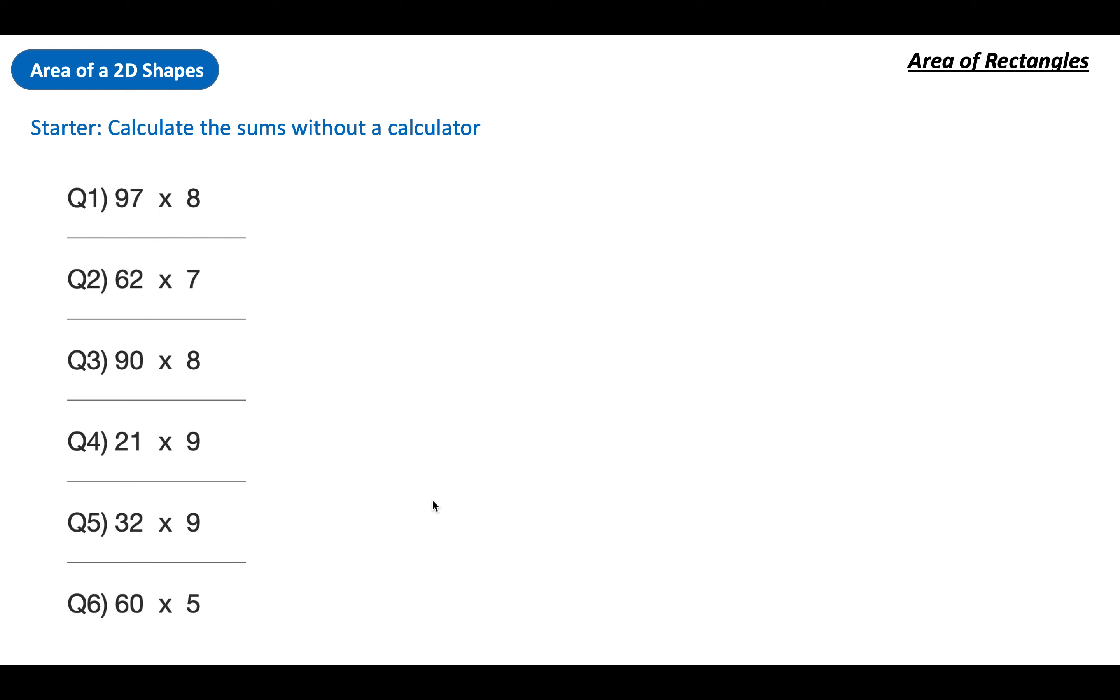Welcome to some area work. Particularly today we're going to do area of rectangles. I want you to do these sums first of all though. This is your starter. Do these without a calculator please. You can use grid method or column method. I'll show you the answers when we're done. Pause, do this on a piece of paper and unpause when you're done.